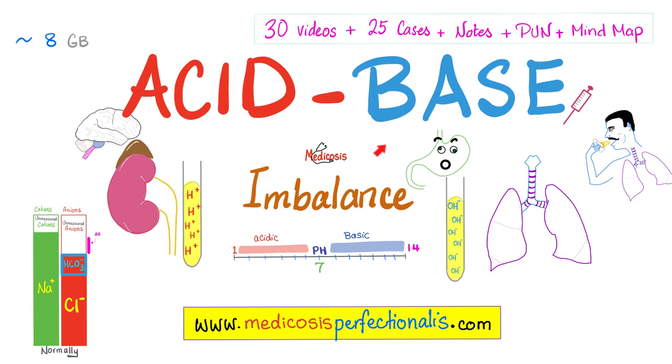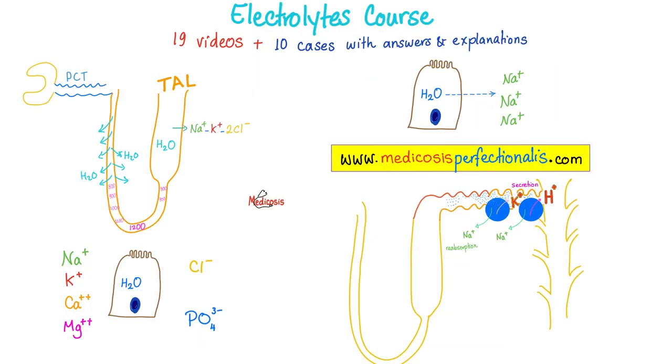If you want to learn more about metabolic acidosis, HAGMA versus NAGMA, and metabolic alkalosis, saline responsive versus saline resistant, if you want to learn about the base excess and the base deficit, the osmolar gap and the anion gap, download my acid-base imbalance course, the best on the planet, at medicosisperfectionalis.com. We talked about chloride today. If you want to learn more about sodium, potassium, magnesium, my beloved phosphate, et cetera, download my electrolytes course at medicosisperfectionalis.com.